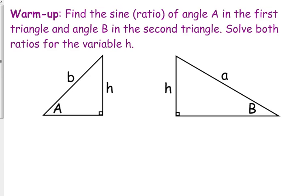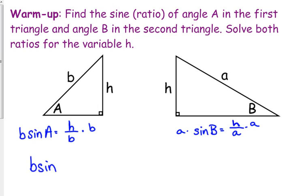Alright, so this is asking you to find the sine ratio of angle A for this first triangle. You know sine of an angle is the opposite over the hypotenuse, and then do the same thing for B in the second triangle. That's opposite over hypotenuse. We're supposed to solve both of these for h. So the first one we multiply both sides by b, the second one we multiply both sides by little a.